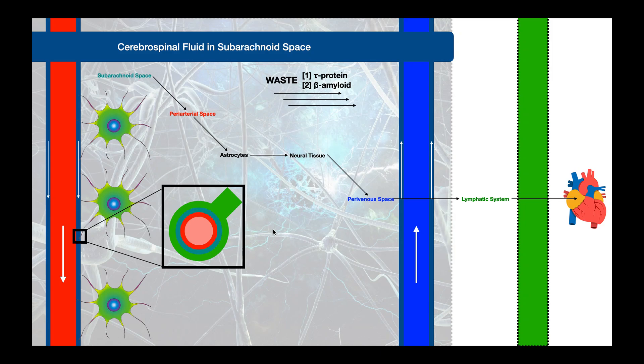From the periarterial space, the cerebrospinal fluid is able to move across this astrocyte foot wall and into all this neural tissue. In this picture, cerebrospinal fluid is moving from left to right. Eventually that cerebrospinal fluid will move into the perivenous space. We have a similar setup on the small veins as we do for small arteries. That cerebrospinal fluid moves into that space and travels along the veins.